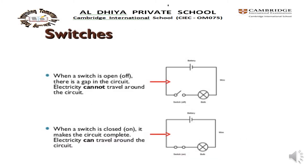How do we know if the switch is open or closed? When a switch is open, it means it is off. There is a gap in the circuit. Electricity cannot travel around the circuit. Look at the picture — the switch is shown open here.